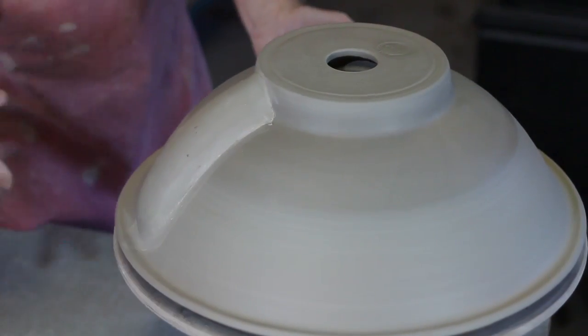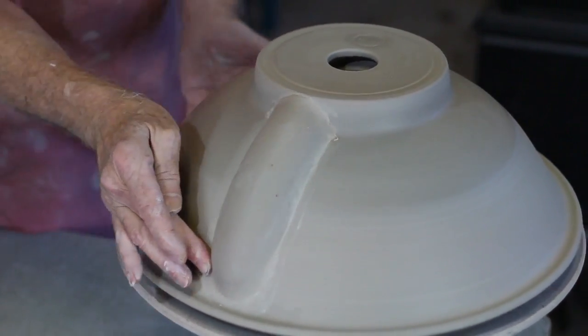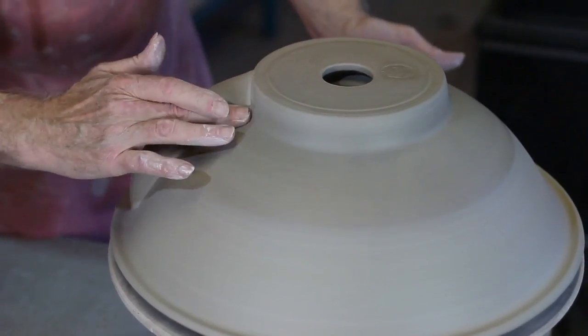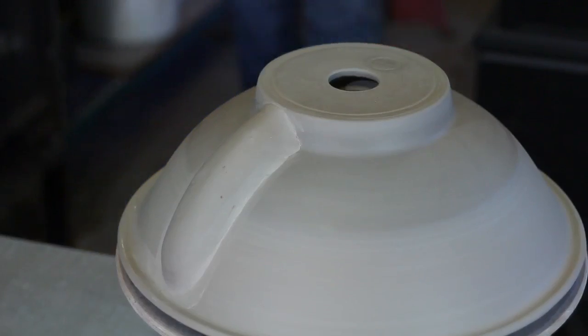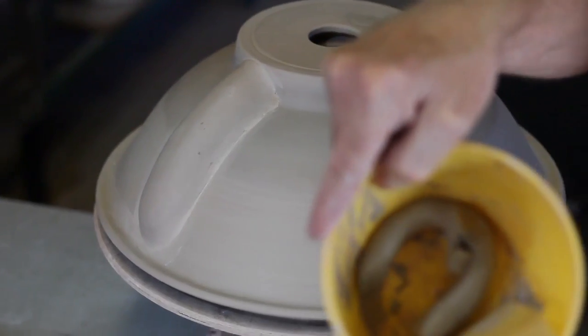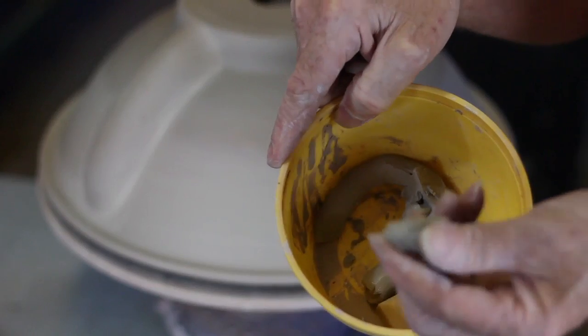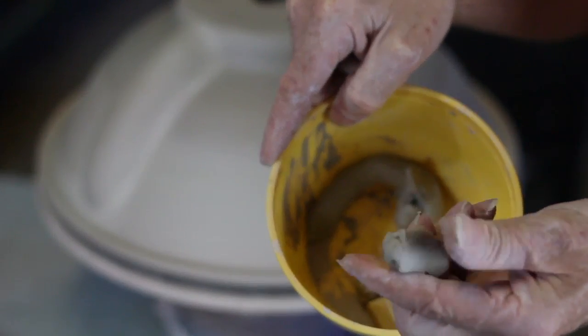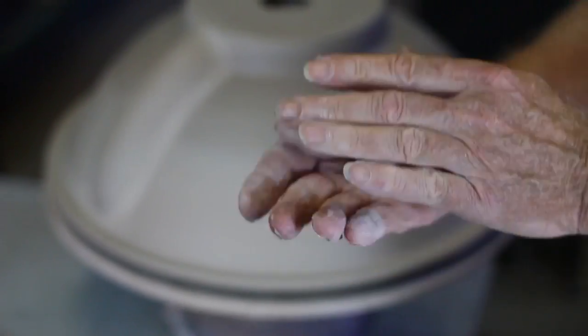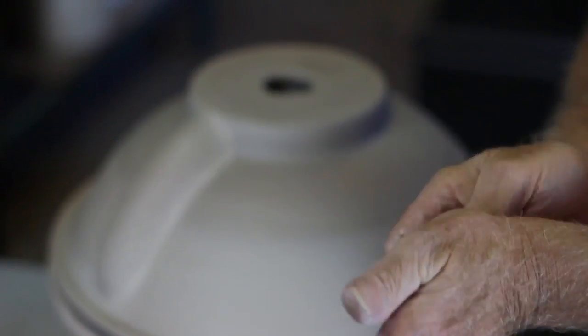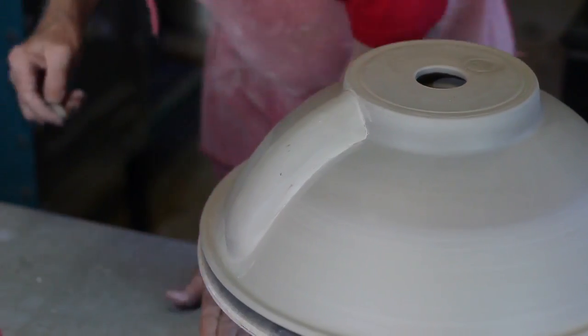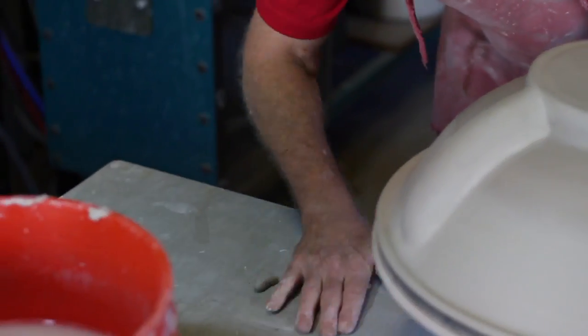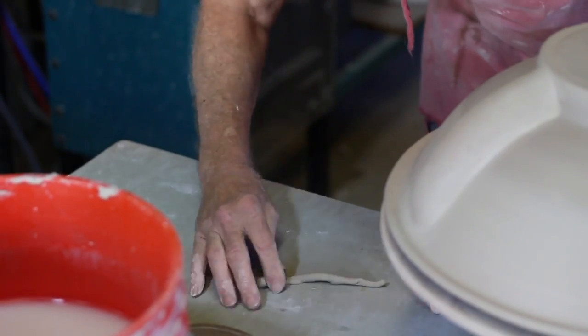Now I do one other thing on these, which maybe I don't need to do, but it's extra insurance. I usually keep some tubs around that has some of my porcelain in it that's softer. This is quite soft. I can grab some of that and quickly make some coils.